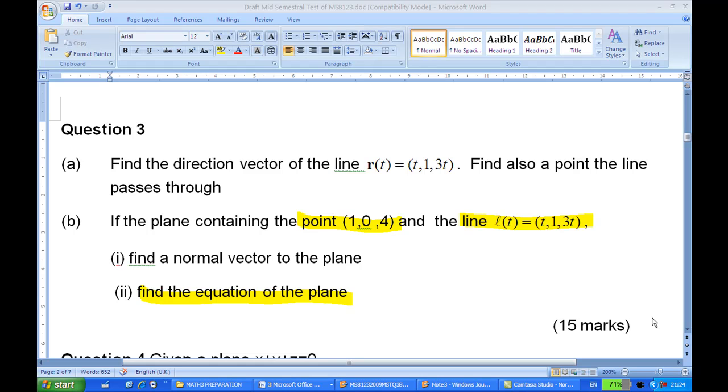Hi, for this recording I will show you how to solve 2009 MST question 3b part 2. Suppose I give a point (1,0,4) and the line L(t) = (t, 1, 3t) which is on the plane. We want to find the equation of the plane.